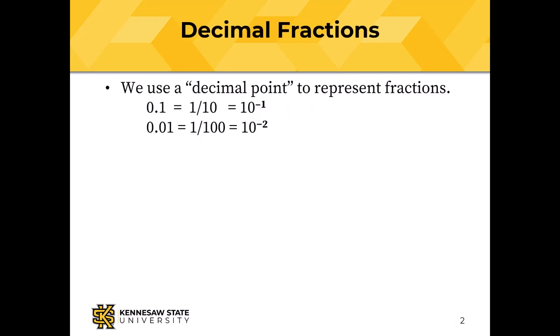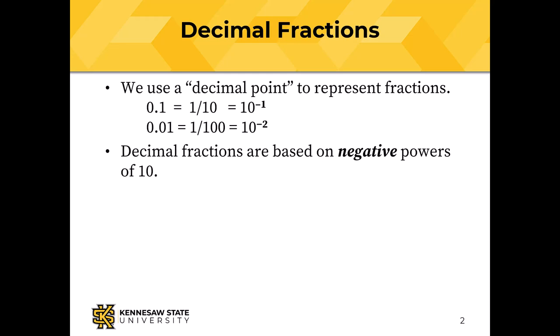Let's review for a moment how decimal fractions work. We use a decimal point to represent fractions, and the fractional part is to the right of the decimal point. So 0.1 is the same as 1 tenth, and that is the same as 10 to the minus 1 power. 0.01 is 1 one-hundredth, or 10 to the minus 2 power. Decimal numbers are based on powers of 10, and decimal fractions are based on negative powers of 10.